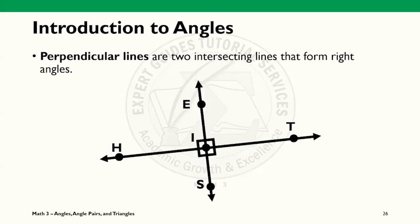Perpendicular lines are two intersecting lines that form 4 90 degree angles. In this slide, the perpendicular lines are lines HIT and line SIE.